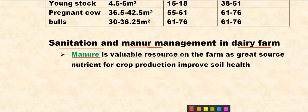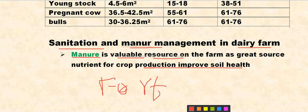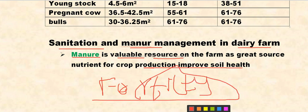Manure — feces — is a valuable source on the farm and a great source of nutrients for crop production, improving soil fertility. Fertility is meant to be used in plant fertilization.